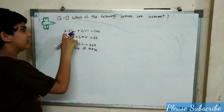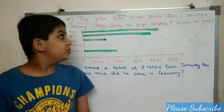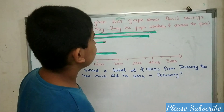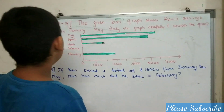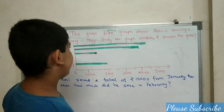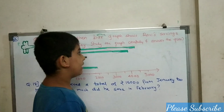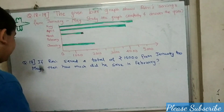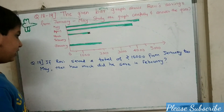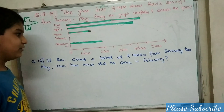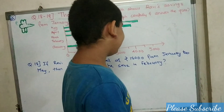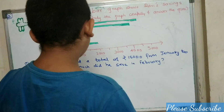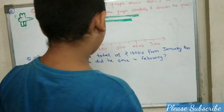X is 10 and XV is 15. This is question number 18. The given bar graph shows Ravi's savings from January to May. Study the graph carefully and answer the questions. If Ravi saved a total of 15,000 from January to May, then how much did he save in February?